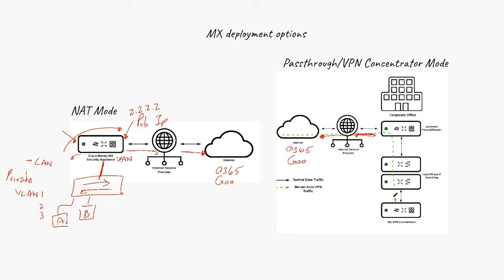This is the upstream firewall router — there is no MX here. The MX is inside your network. In this specific scenario, this upstream device is your NAT device, so the MX is not acting as a NAT device. You have your public IP address 2.2.2.2 configured on the one interface of this upstream device.